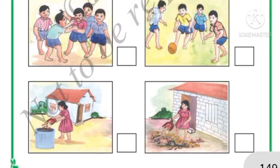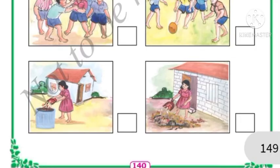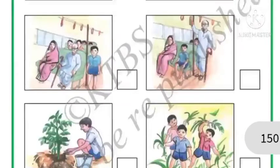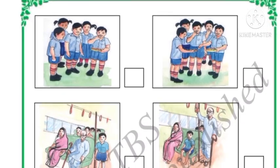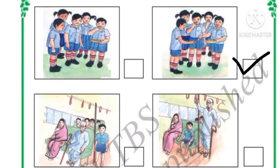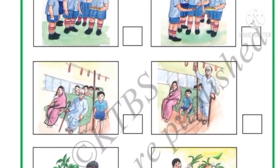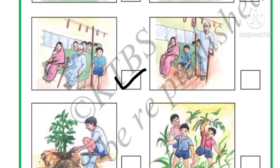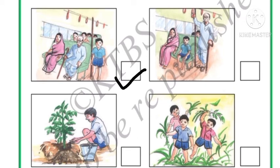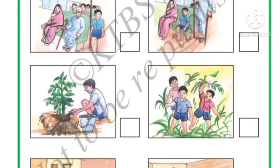Next: a girl is putting garbage in the dustbin versus throwing it on the street — putting it in the dustbin is the good thing, so we put a tick mark there. Then: a boy alone is eating food versus sharing and eating — we prefer sharing and eating. Then: a boy is standing while elders are sitting versus a boy sitting while an old man is standing — we prefer to stand and give our place to the elders to sit.